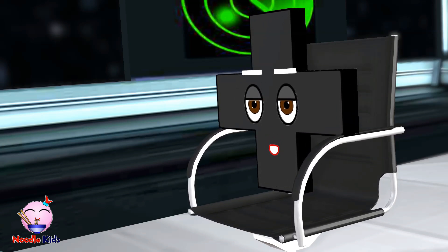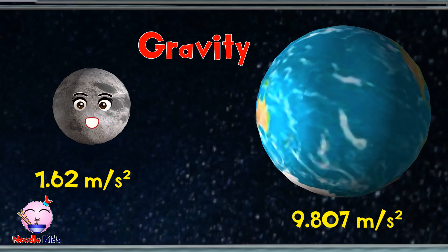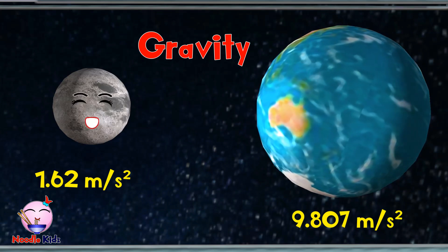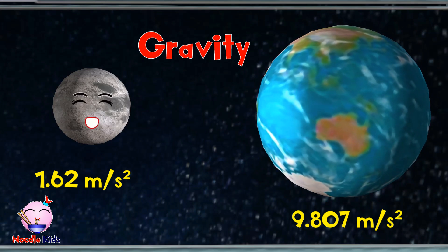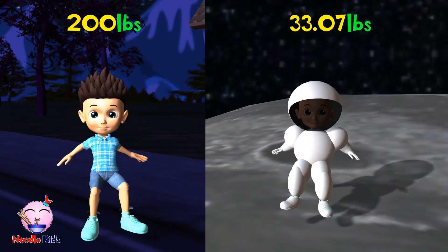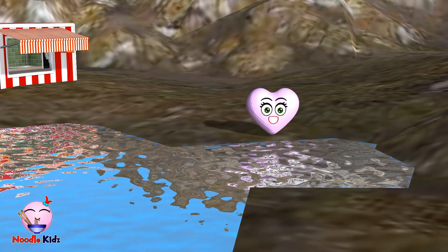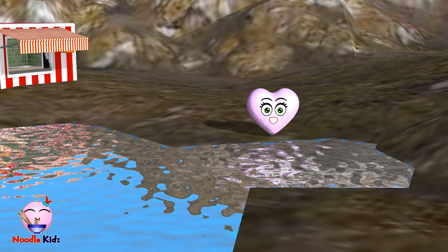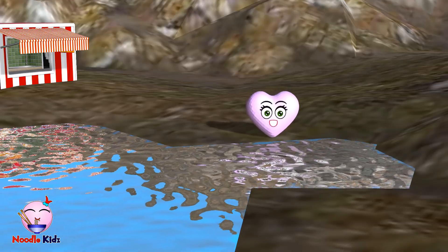But why is he walking so wobbly like he's on a trampoline? It's because of the low gravity on the moon. Earth's gravity is 9.807 meters per second squared, where the moon's is only 1.62 meters per second squared. Which means everything is lighter on the moon. If you weigh 200 pounds on Earth, you would weigh only 33.07 pounds on the moon, which means you could jump higher. The moon's gravity also affects the water level on Earth. If you go to the beach, when the moon is near or far, the water level will go higher — it's called high tides.